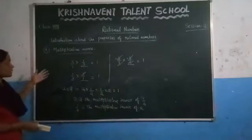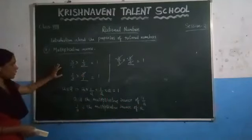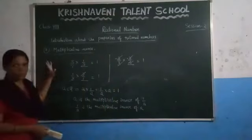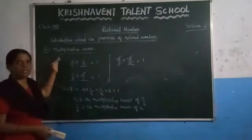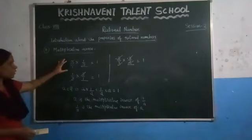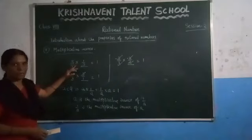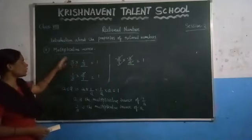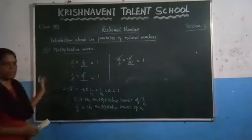In the examination, they will ask what is the multiplicative inverse of 5 — you mention 1 by 5. If they ask what is the multiplicative inverse of 2 by 5, you write 5 by 2. You just have to write the reciprocal of the given number to get the multiplicative inverse.